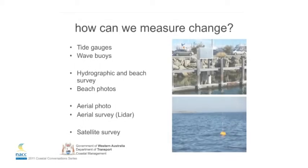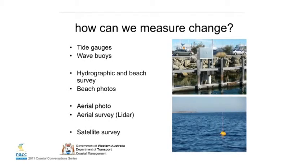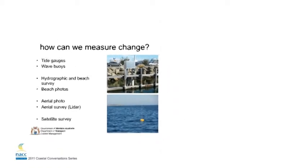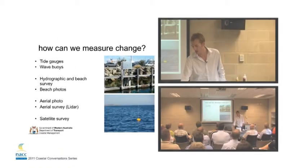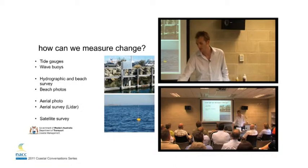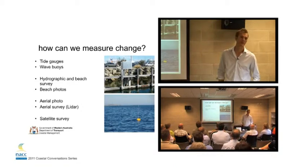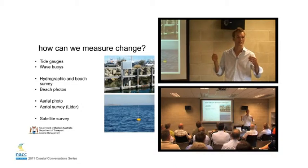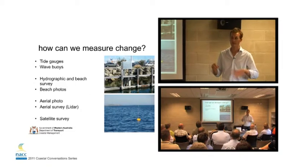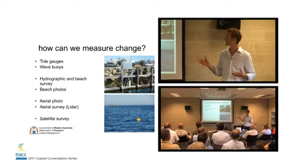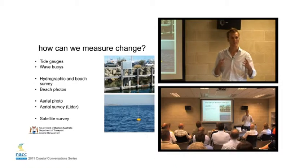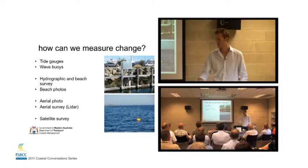So, how can we measure change? What do we have around the state? We've got tide gauges — the next slide will explain what a tide gauge is. We've also got wave buoys. We've got hydrographic survey, which is what you collect from a boat, beamed down to the seabed floor. We've also got beach surveys — they're mainly in places where there's been development, but there are surveys that exist.